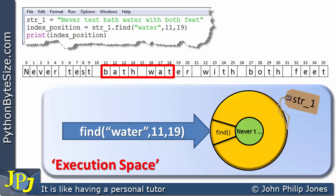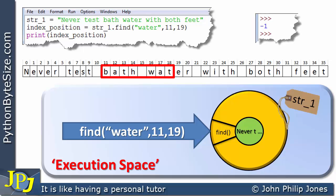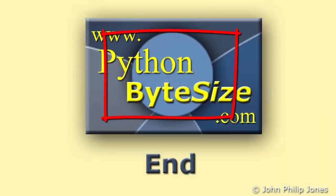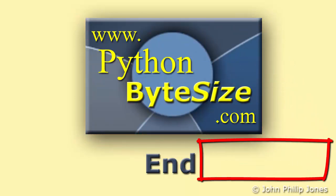We're now looking in the region from index 11 to 18 to see if 'water' is there, and clearly it isn't — part of it is, but we need the whole word. So the find function can't find it and returns minus one. That minus one is assigned to index_position and then printed, and we can see minus one appears in the program's output. As programmers, if we get a number back that isn't minus one we've found the string; if we get minus one, the substring doesn't exist in the area we were searching.